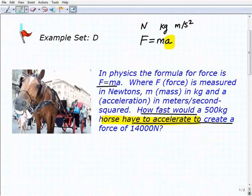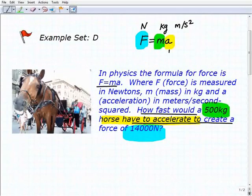Now if you notice, we're given the force - we want to create a force of 14,000 newtons, so we're given that. We're also given that the horse weighs 500 kilograms, so we got the mass. So what we're going to be looking for is acceleration. We're going to be plugging in these values and solving for A.